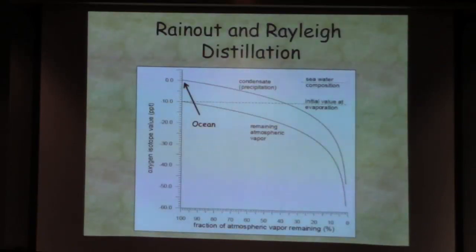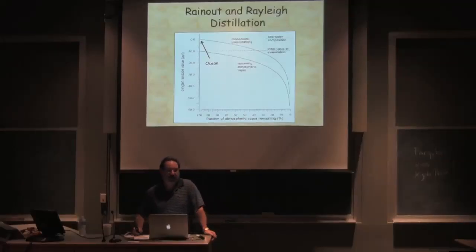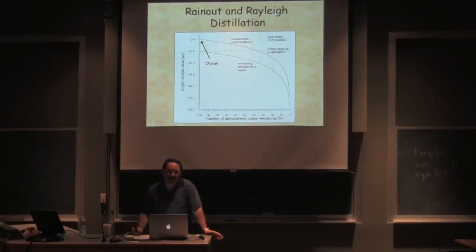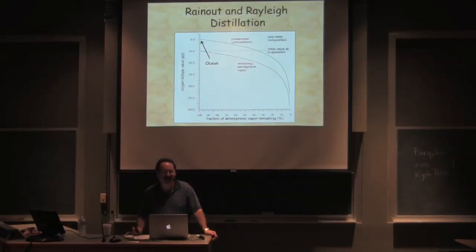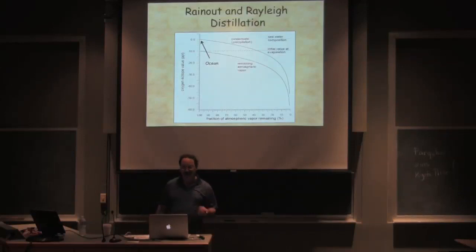On first evaporation, water vapor is around minus 10 per mil, and rain that falls around Hawaii and Fiji is around minus 3. So if you spend a lot of money on Fiji or Hawaii bottled water, all you're doing is getting enriched ¹⁸O water relative to everything else you could buy.